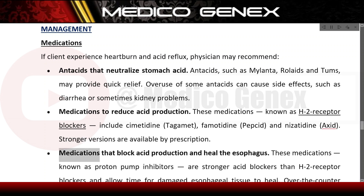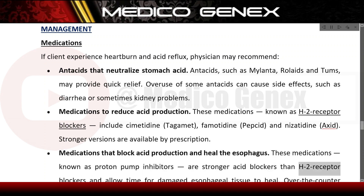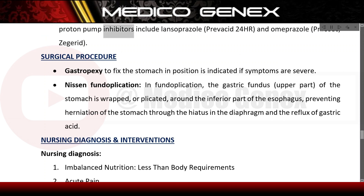Medications that block acid production and heal the esophagus, known as proton pump inhibitors, are stronger acid blockers than H2 receptor blockers and allow time for damaged esophageal tissue to heal. Over-the-counter proton pump inhibitors include lansoprazole (Prevacid 24HR) and omeprazole (Prilosec, Zegerid).